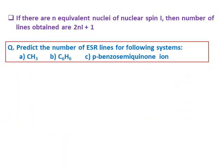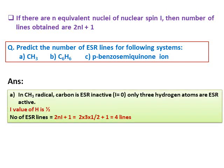Now we will discuss some problems. Predict the number of ESR lines for the following systems: methyl radical, benzene, and para-benzosemiquinone ion. For methyl radical: carbon is ESR inactive (I=0). Only the three hydrogen atoms are ESR active, with I=1/2. The number of ESR lines = 2NI+1 = 2×3×(1/2)+1 = 4. So four lines are possible for the methyl radical.